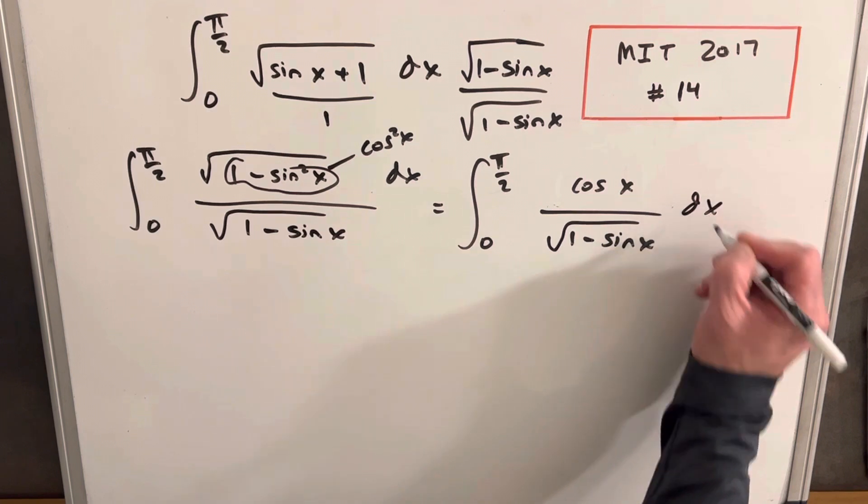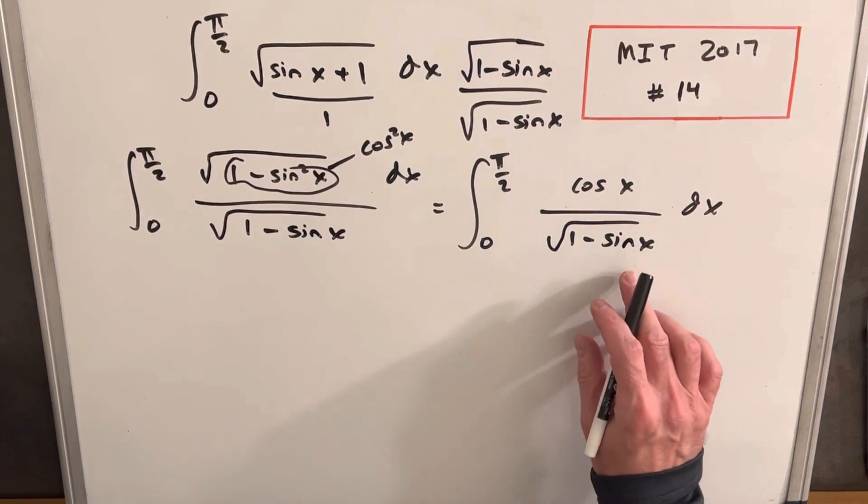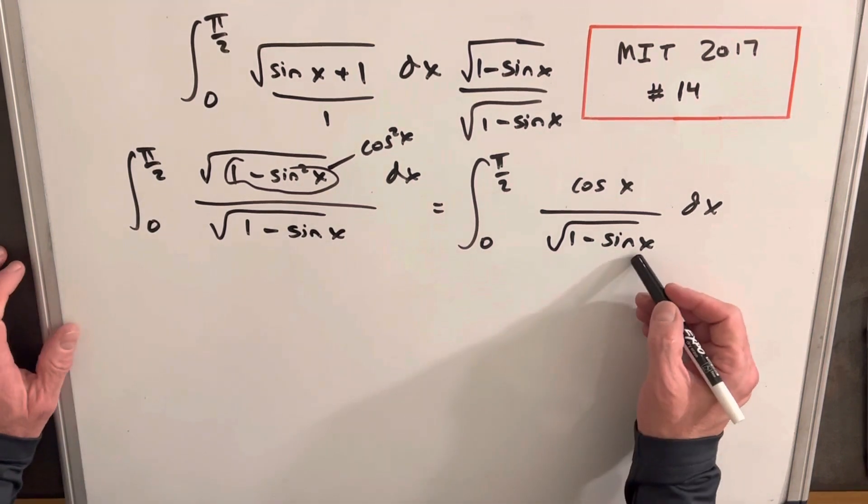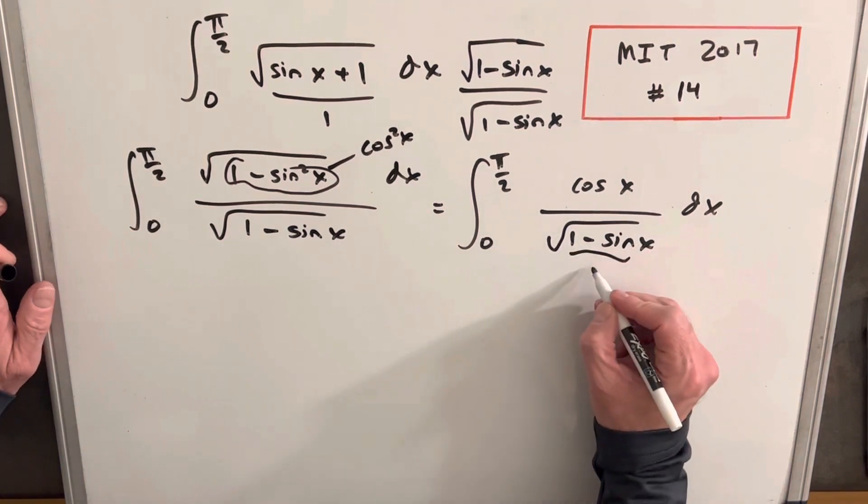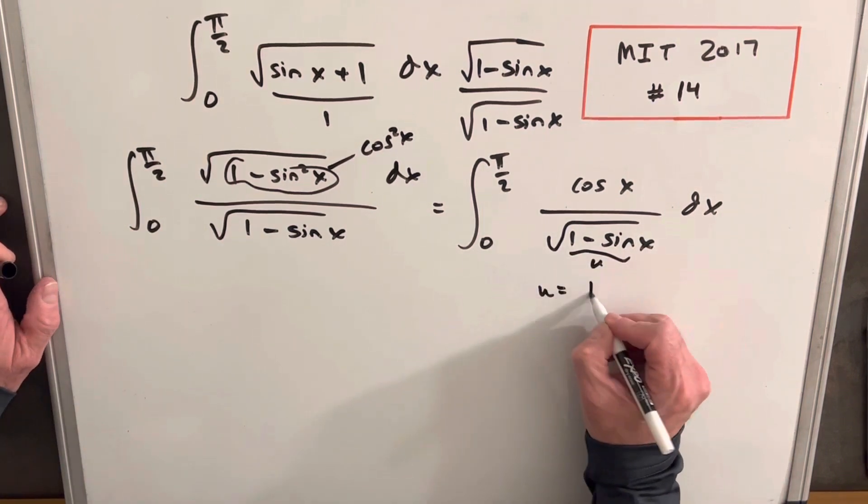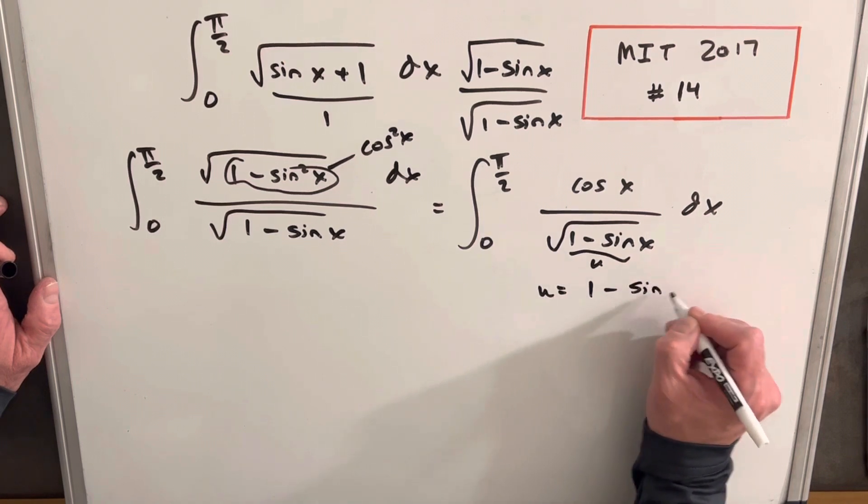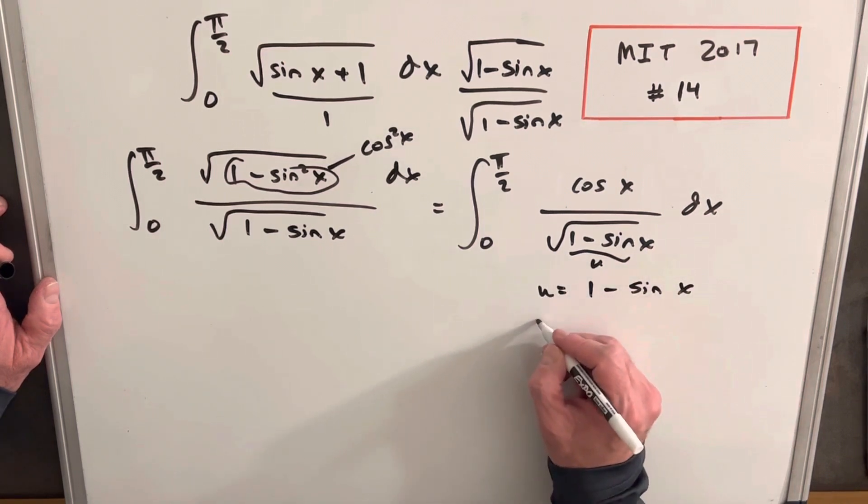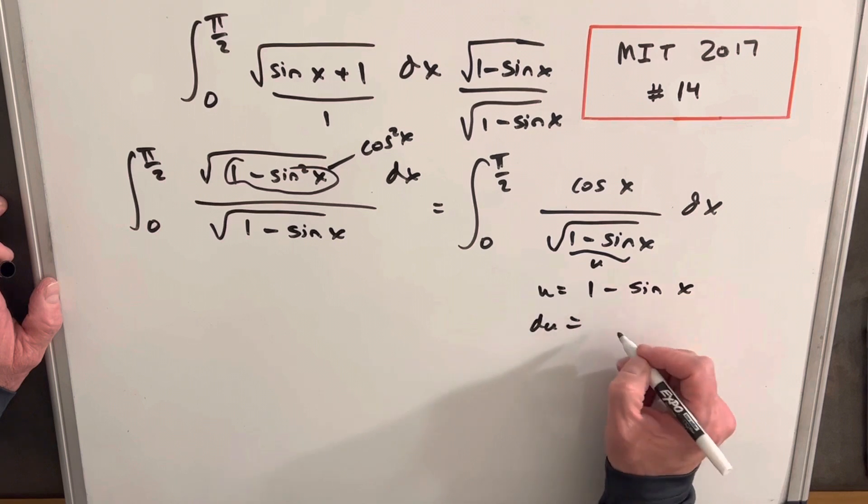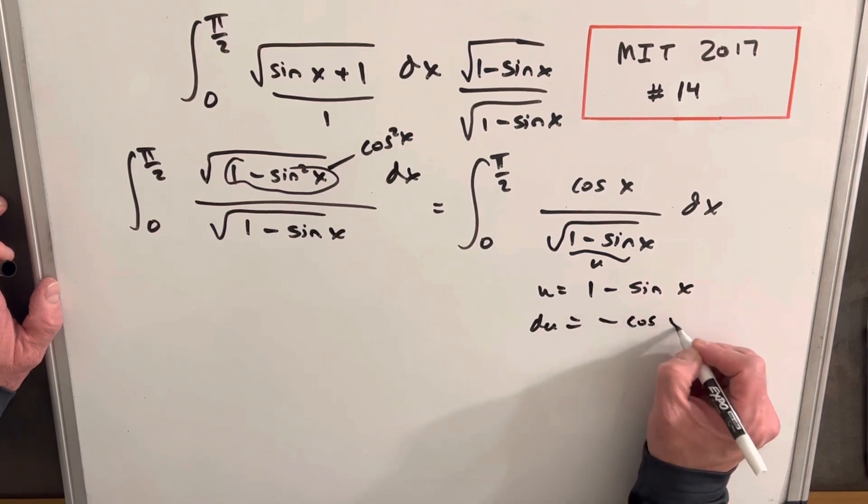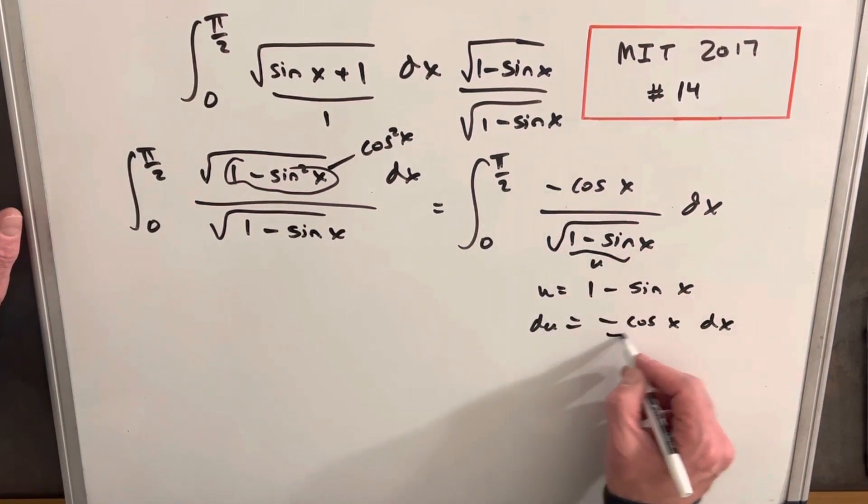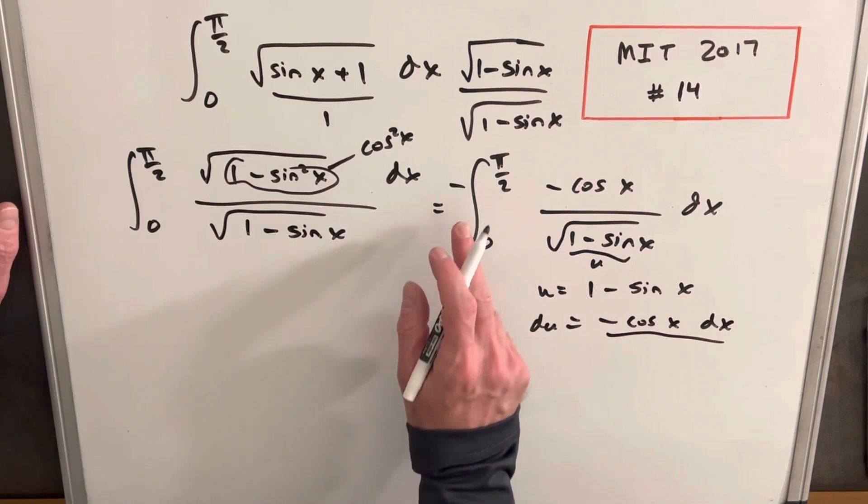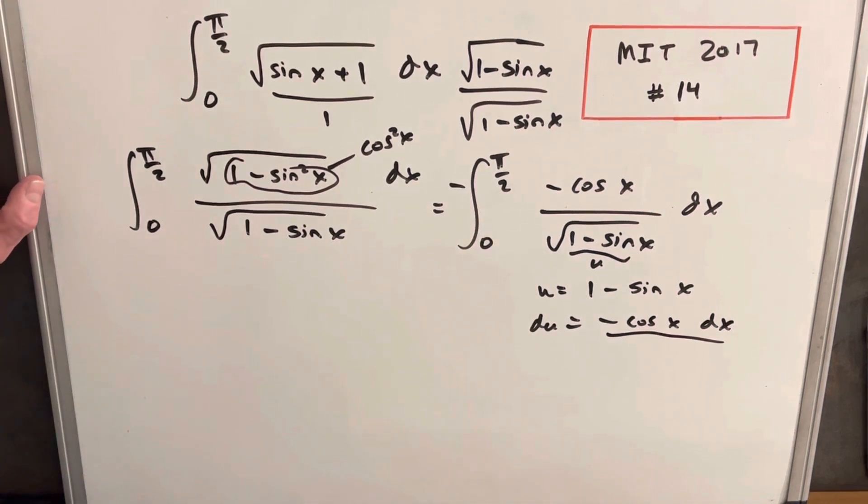But don't forget the dx. But now I think we really kind of fixed this, because we can do a u substitution with the derivative of sine being cosine. So let's call this our u. So we're going to have u equals 1 minus sine x. Then our du, derivative of 1 is 0, minus derivative of sine is cosine x dx. I'm just going to throw a minus in there just so we can match this exactly. But I'll put it out front so we don't change the expression.